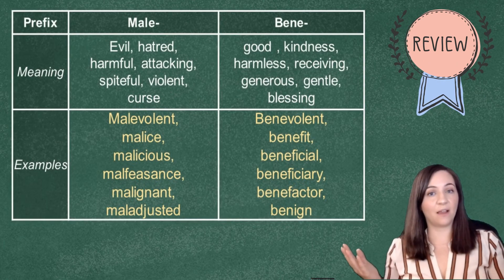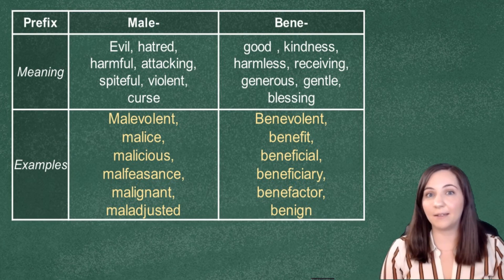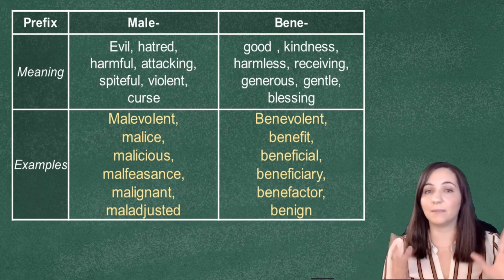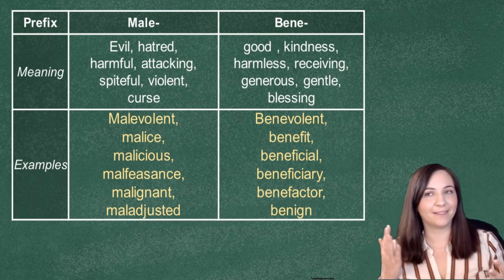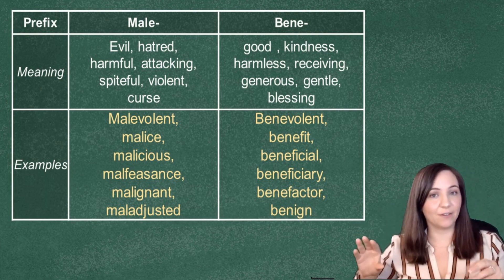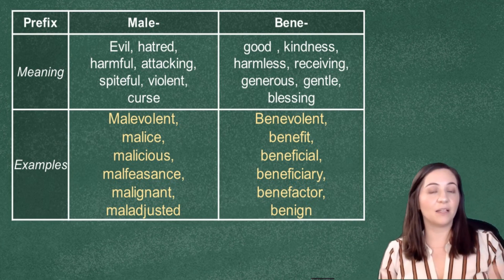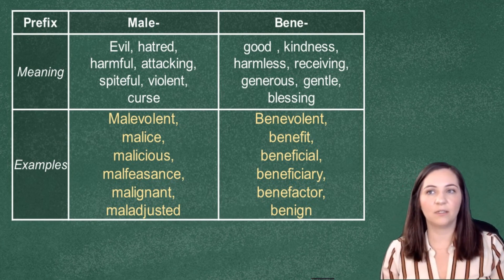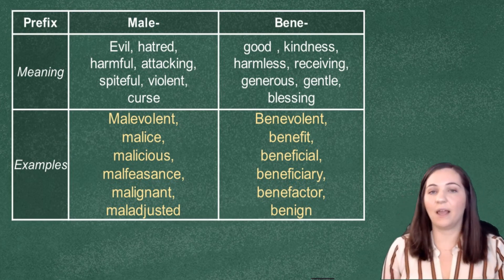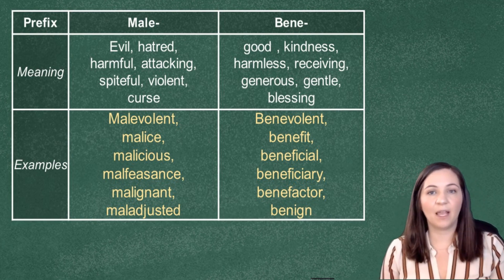Let's review before we go. 'Male' and 'bene' are both prefixes from the Latin language. Male means bad and bene means good, so if you see them at the beginning of a word, you can guess — even if you don't know the word — that one might be bad and one might be good. We've made a chart showing everything learned today: 'male' generally means something is evil, associated with hatred or causing harm, while 'bene' generally means good, associated with kindness, generosity, and being harmless.